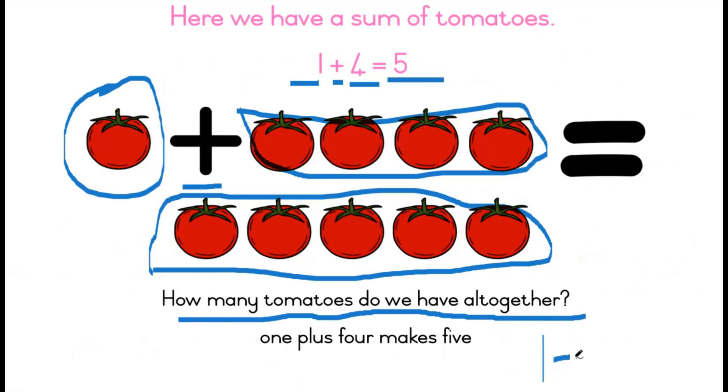We started off with one. We then added four, which gives us five. What does this mean? This means that one plus four makes five.